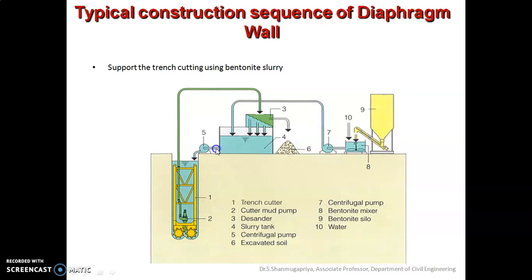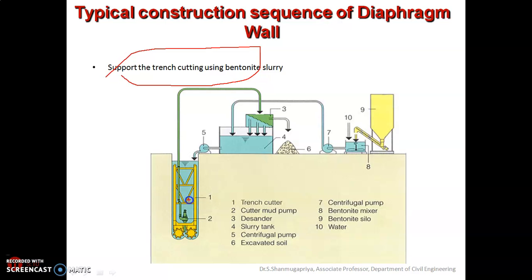The third step is to support the trench cutting using bentonite slurry. During excavation, you pour the bentonite slurry, which gives stability to the soil and prevents the collapse of the soil during excavation. Bentonite slurry is a type of clay mixed with potable water. Pouring the bentonite slurry makes it easier to carry out the excavation process. In this picture you can also see the bentonite plant.